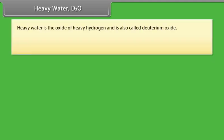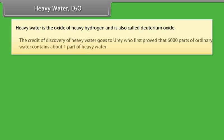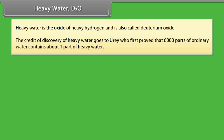Heavy water: Heavy water is the oxide of heavy hydrogen and is also called deuterium oxide. The credit of discovery of heavy water goes to Urey, who first proved that 6000 parts of ordinary water contains about one part of heavy water.